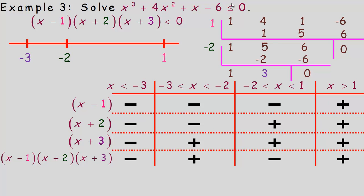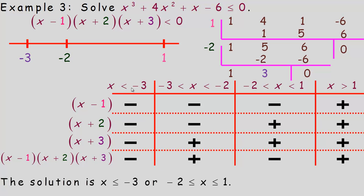We're looking for where the cubic is less than or equal to 0, so we want the negative intervals. Those are below negative 3 and between negative 2 and 1. With the equal to sign included, the solution is x less than or equal to negative 3, or negative 2 less than or equal to x less than or equal to 1. On the number line, we shade in negative 3 going left, and from negative 2 to 1 as a closed segment.